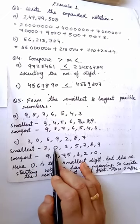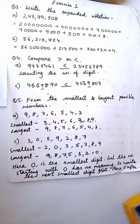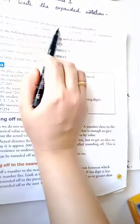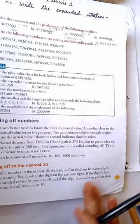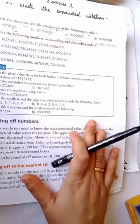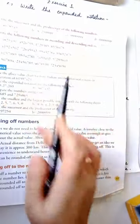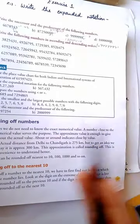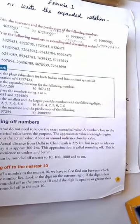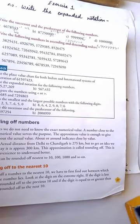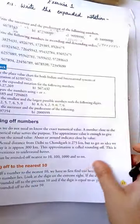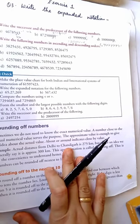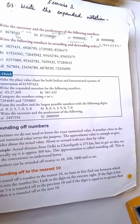So children, we have done question number 3, 4 and 5. Next time I will be starting with successor and predecessor, which we have learnt in class 4th also. Successor is by adding 1 to the number and predecessor by subtracting 1. Ascending and descending is also simple — ascending is from the smaller to the greater number, and descending is from the greater to the smallest. We are also going to round off numbers from nearest 10 to 1000. Thank you children, stay safe and have a nice day.